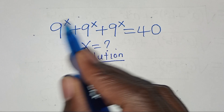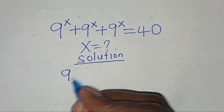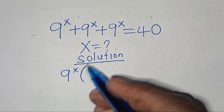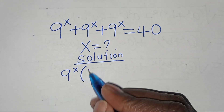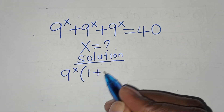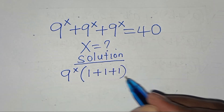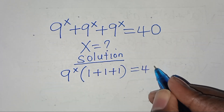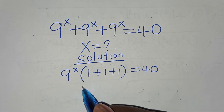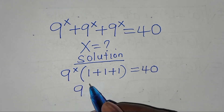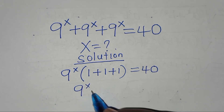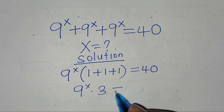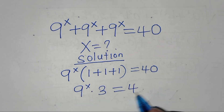9 to the power x is common here, so we can factor out 9 to the power x. So 9 to the power x divided by 9 to the power x gives 1 plus 1 plus 1, which equals 40. So we have 9 to the power x times 3, equal to 40.